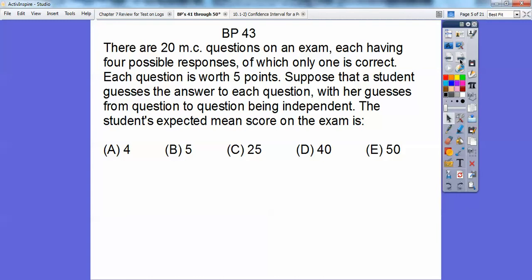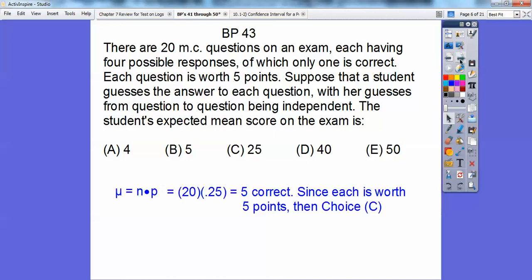So here there's 20 multiple choice questions on an exam. Each have four possible responses of which only one is correct. So that means 25%, right? One fourth of the time they're correct. So each question is worth five points. Suppose that a student guesses the answer to each of these 20 questions, with her guesses from each question being independent. So the student's expected mean score on the exam is, well, since it's one fourth or 0.25, you just take the number of problems, multiply that. So your mean score is just the number times each probability. And then I get five. So that would be choice C. So choice B is a deception because it's asking, so what's her mean score on the exam? Well, she's going to get five correct. So five times five would be 25.